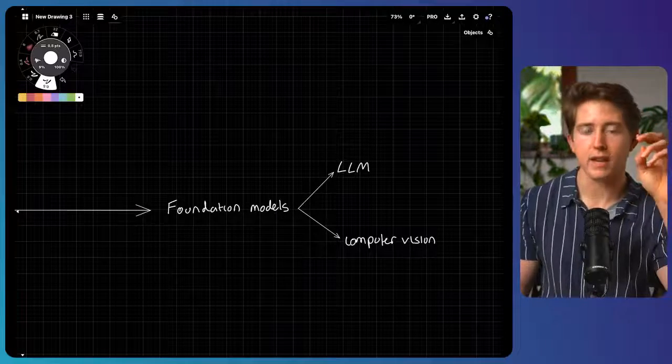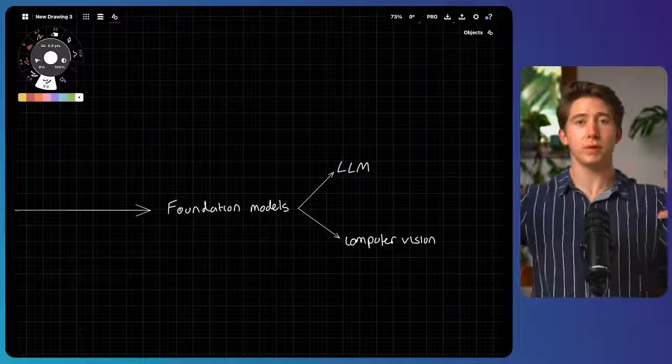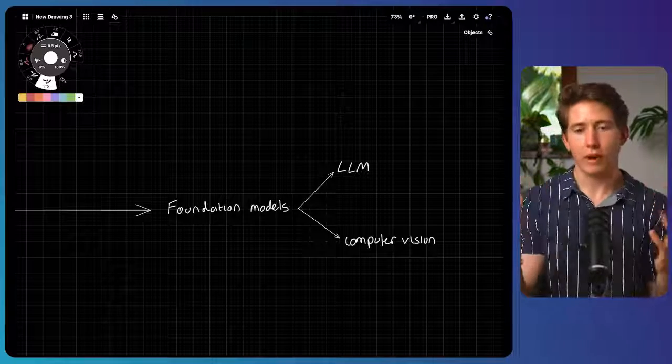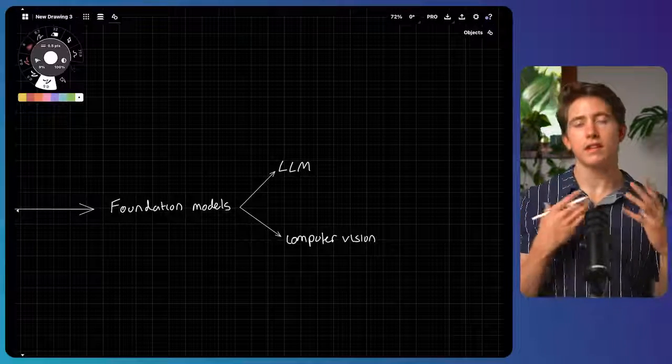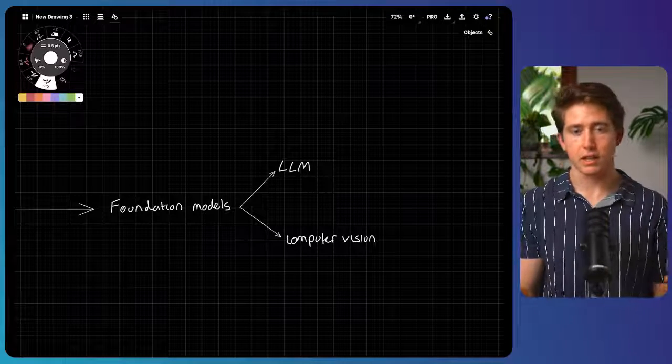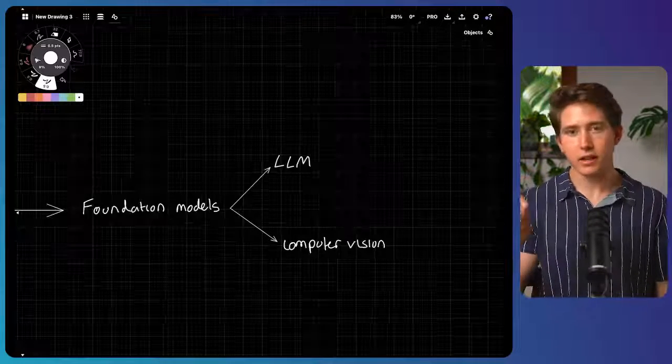And so this is this concept of deep learning, which can be applied to any of these four different methods of learning. And then through deep learning, we can form what we call foundation models, which are just really big models where they've learned on huge amounts of data and can do a broad range of tasks. And these are the things that you've probably been interacting with when you're using ChatGPT, because this is what we call a large language model.